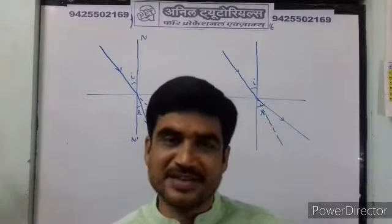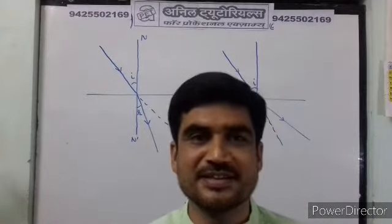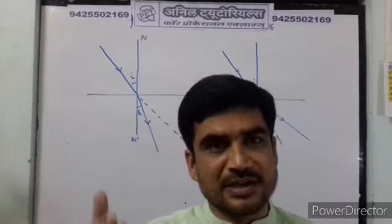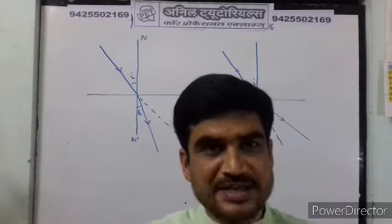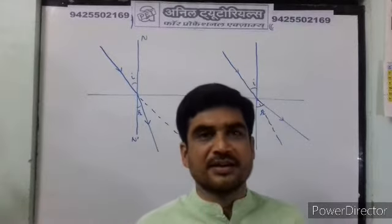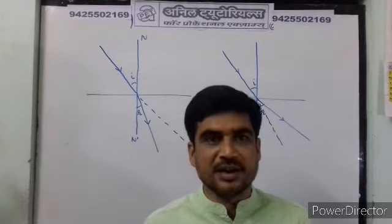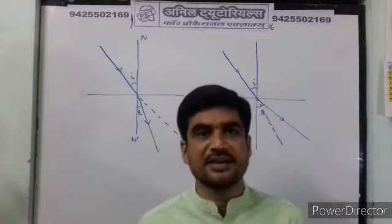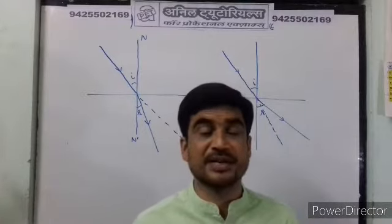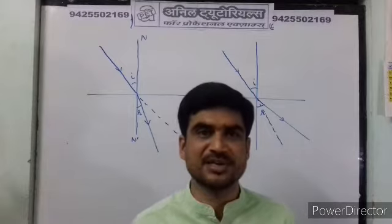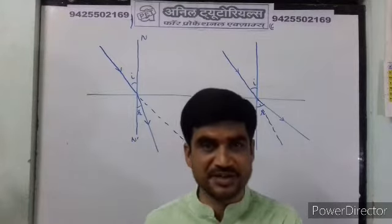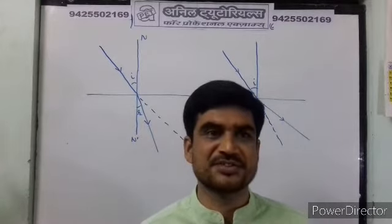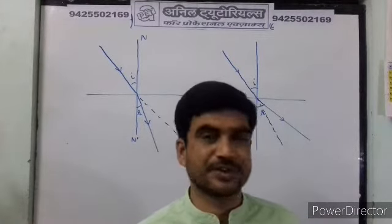In the last lecture, we had seen the laws of refraction. We saw that the normal, the incident ray, and the refracted ray all lie in the same plane. The second law states that the ratio of the sine of the angle of incidence to the sine of the angle of refraction is constant. This law is given by the scientist Snell, and is also called Snell's law of refraction.